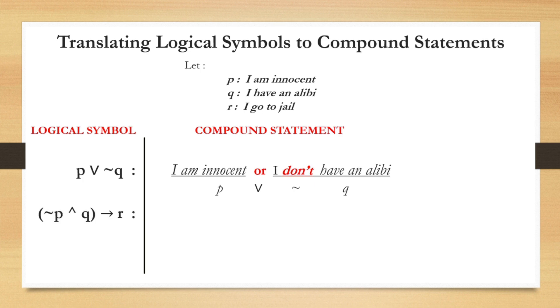Second logical symbol is if negation P and Q then R. So when we are going to translate this into compound statements, it is if I am not innocent and I have an alibi then I go to jail.